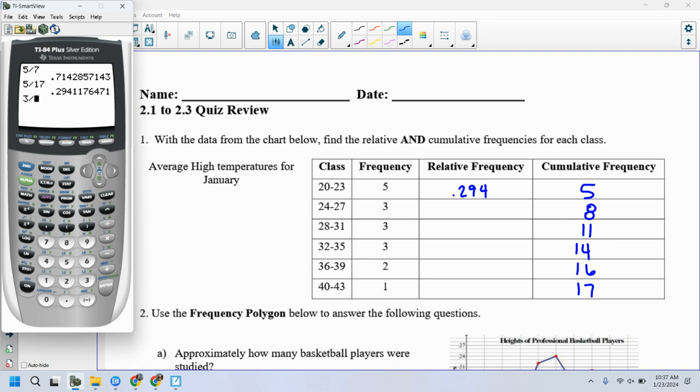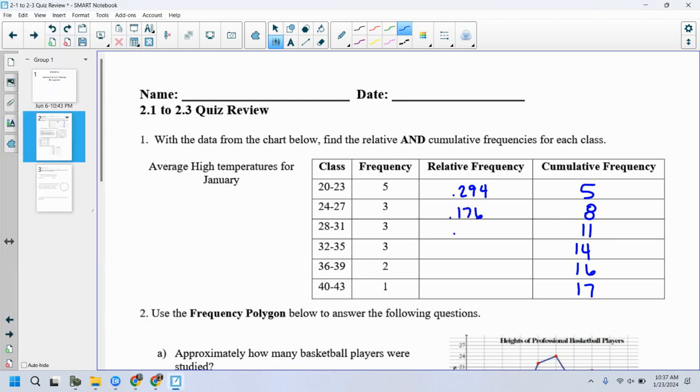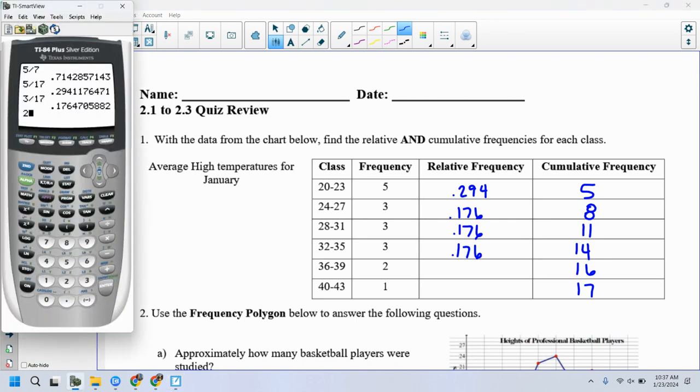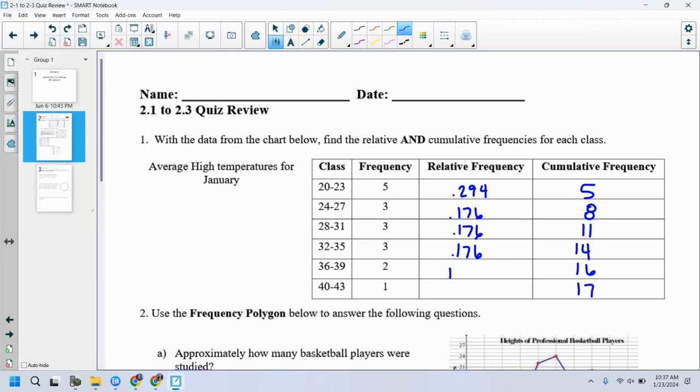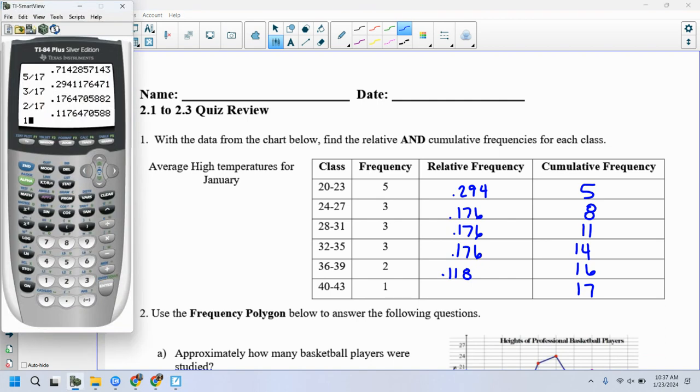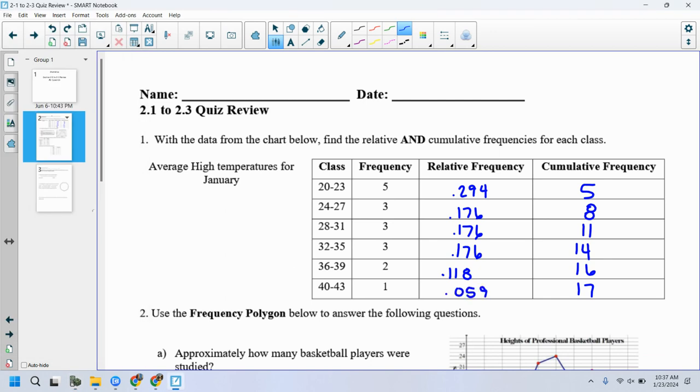3 out of 17. And this is all three of those categories. 17.6. 176. 176. 176. That's nice and convenient there. 2 out of 17 gives me 11.8, 0.118. 1 out of 17 gets me 0.059. Remember relative is just the percentage out of the whole. Cumulative is adding up all as you go.